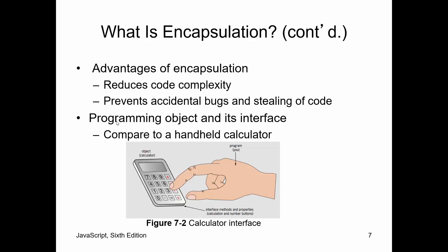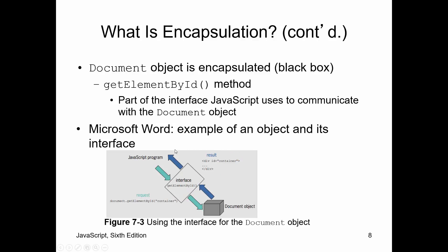So when you hide things like that, it reduces complexity, it prevents accidental bugs, it prevents people from stealing your code. They mention that, for example, when you work with HTML, the document object is encapsulated. But you can use the getElementById method, which is part of the JavaScript interface that's used to communicate with it. Good example.